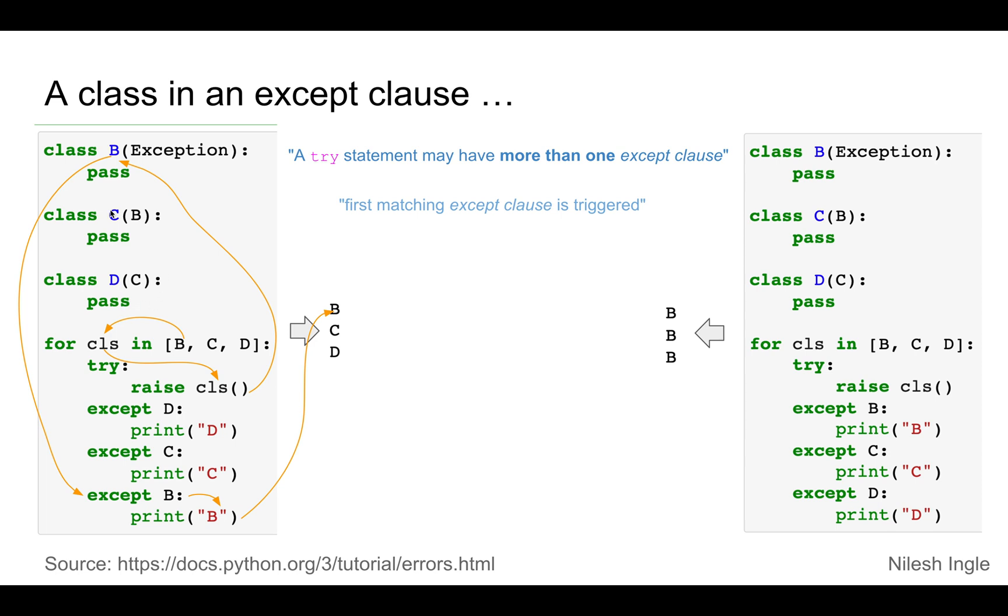And again, let's imagine that C is also an exception or an error and that class C is using class B. And then class B is the final class that's in this particular kind of derived classes.